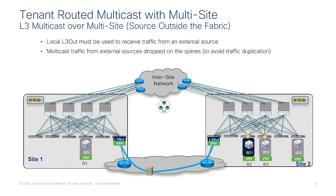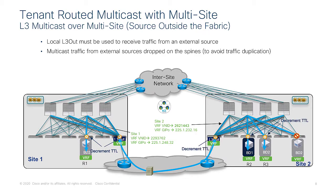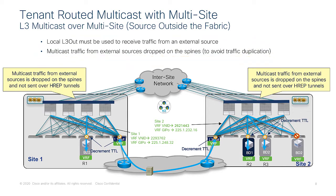If the source is external to the fabric, each site must have a local L3 out to receive the traffic. The source sends the packet toward the sites based on receivers having sent IGMP joins and the control plane being established. Traffic is forwarded inside each site to reach the receiver, with TTL decremented twice on the border leaf and the compute leaf. An ACL is applied on the spine to avoid sending traffic through the inter-site network, which would cause receivers in remote sites to receive the traffic twice — from the local L3 out and from the inter-site network. This means a local L3 out must be active for local receivers to receive externally sourced traffic.